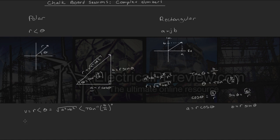Similarly, if we have the same vector, v expressed in rectangular, as a plus jb, that's going to be the same as r cosine theta plus j r sine theta.